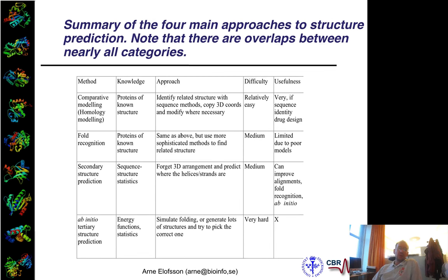Then there was a category called fold recognition. The idea was that if you could find templates not by using sequence, but by using structural information or other information — basically finding more distantly related sequences and structures. That has more and more been taken over by using sequence information instead, because the sequence databases are so much bigger and the methods are much better. It has become quite useful for hard modeling cases, and you can use different combined methods there.